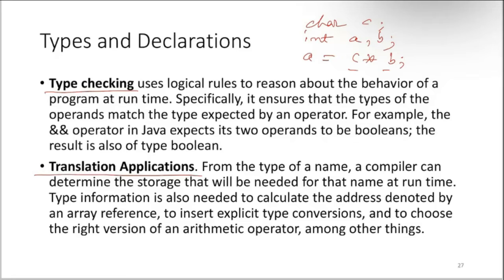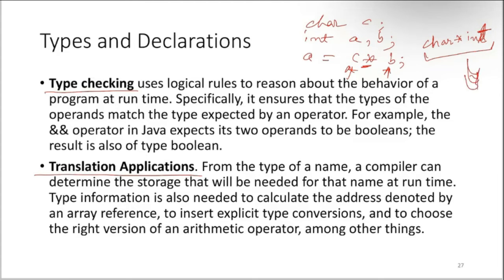During compilation, this error comes from the type checking phase. When type checking runs, it checks whether the multiplication operation is supported between the type of c (char) and the type of b (int). It sees that char * int is not supported by the language, and then it generates an error.